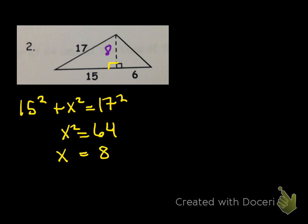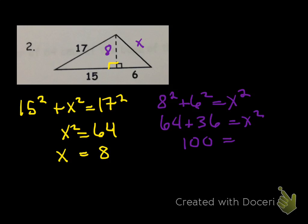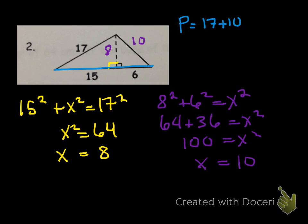Now we have enough information to find the area, but not the perimeter. For the perimeter, we need to know the remaining side length. So now we're going to do 8 squared plus 6 squared — using the Pythagorean theorem to figure that out. So 100 equals x squared, so x is equal to 10. When we're figuring out the perimeter, all we're going to do is add: the perimeter is 17 plus 10 plus this side length right here, 15 plus 6, which is 21. When you add those together, you get 48. It doesn't tell you whether it's centimeters or millimeters, so we can just put units.